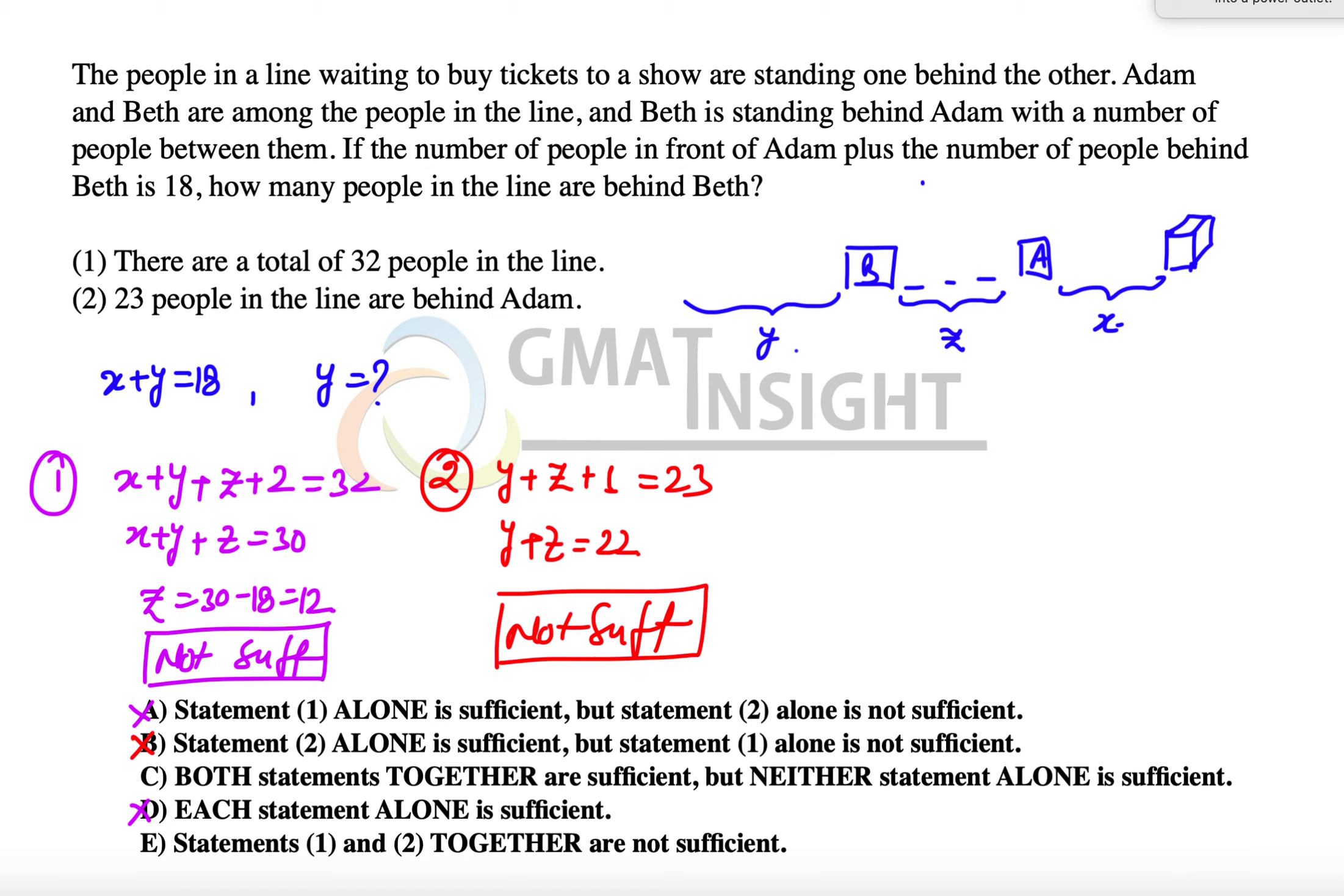Option D is also out. The next step is to combine the two statements. The combination of the two statements tells us that z is equal to 12 from the first statement. y plus z is equal to 22, which means y will be equal to 22 minus 12, that is 10.